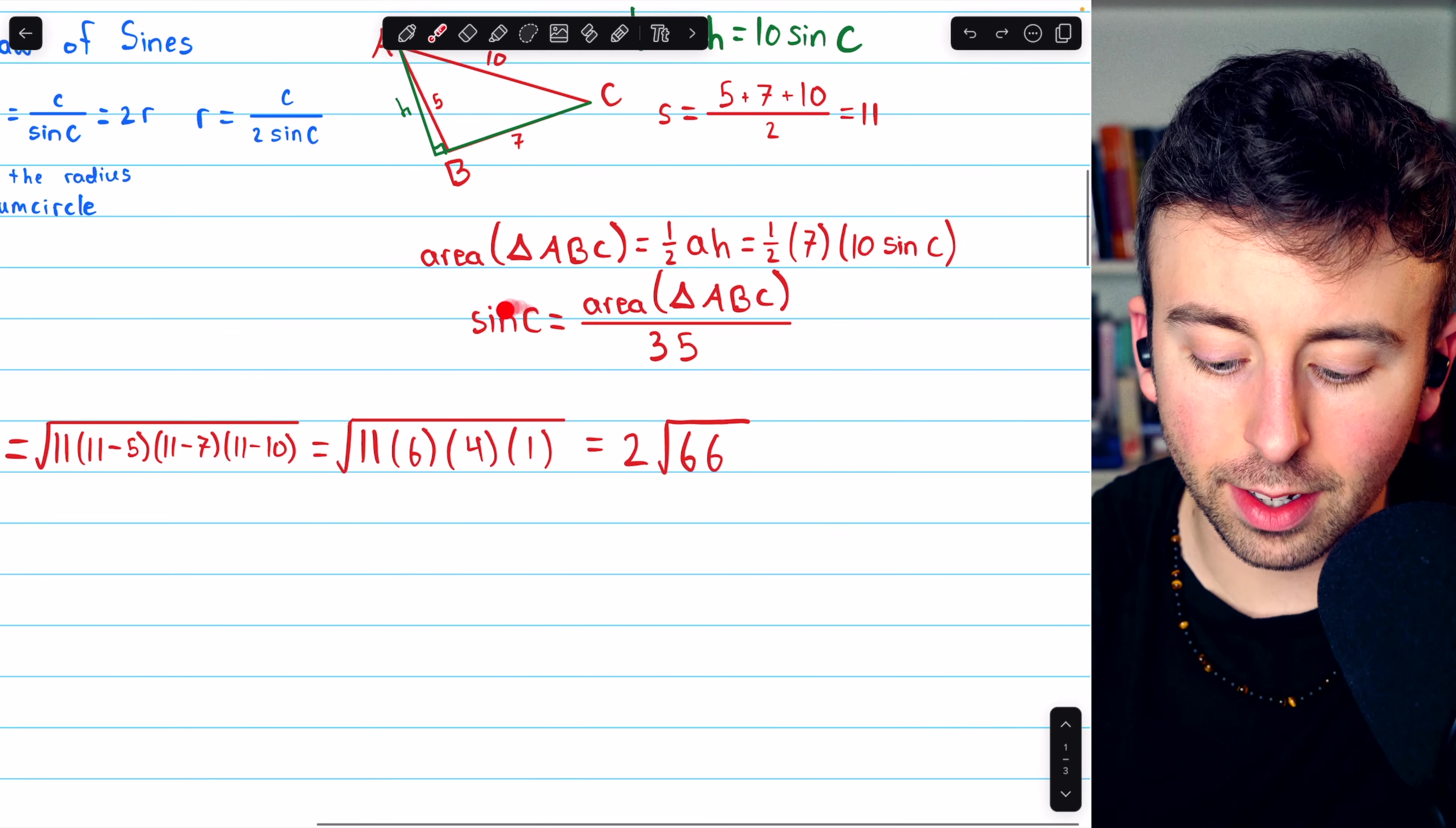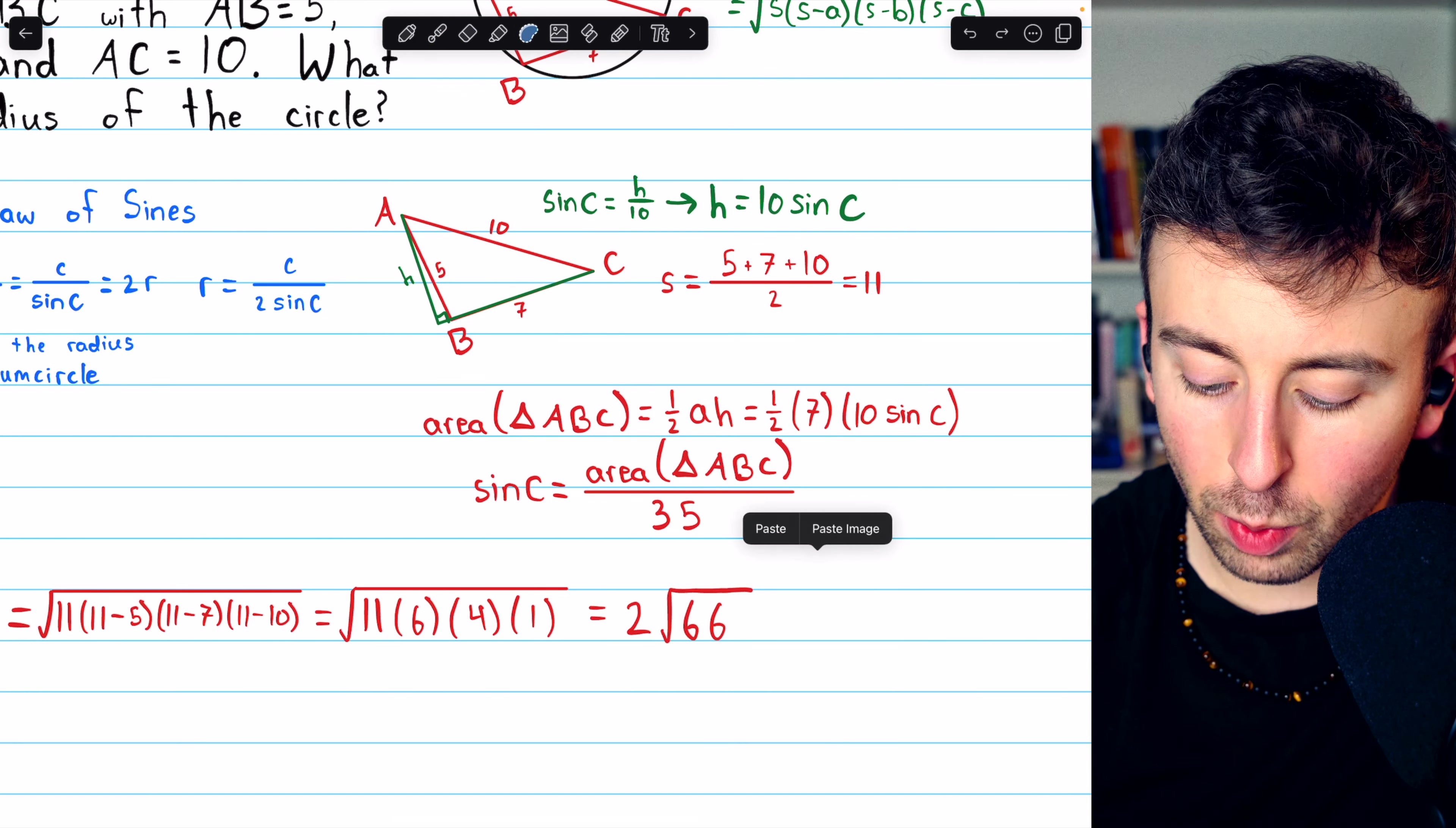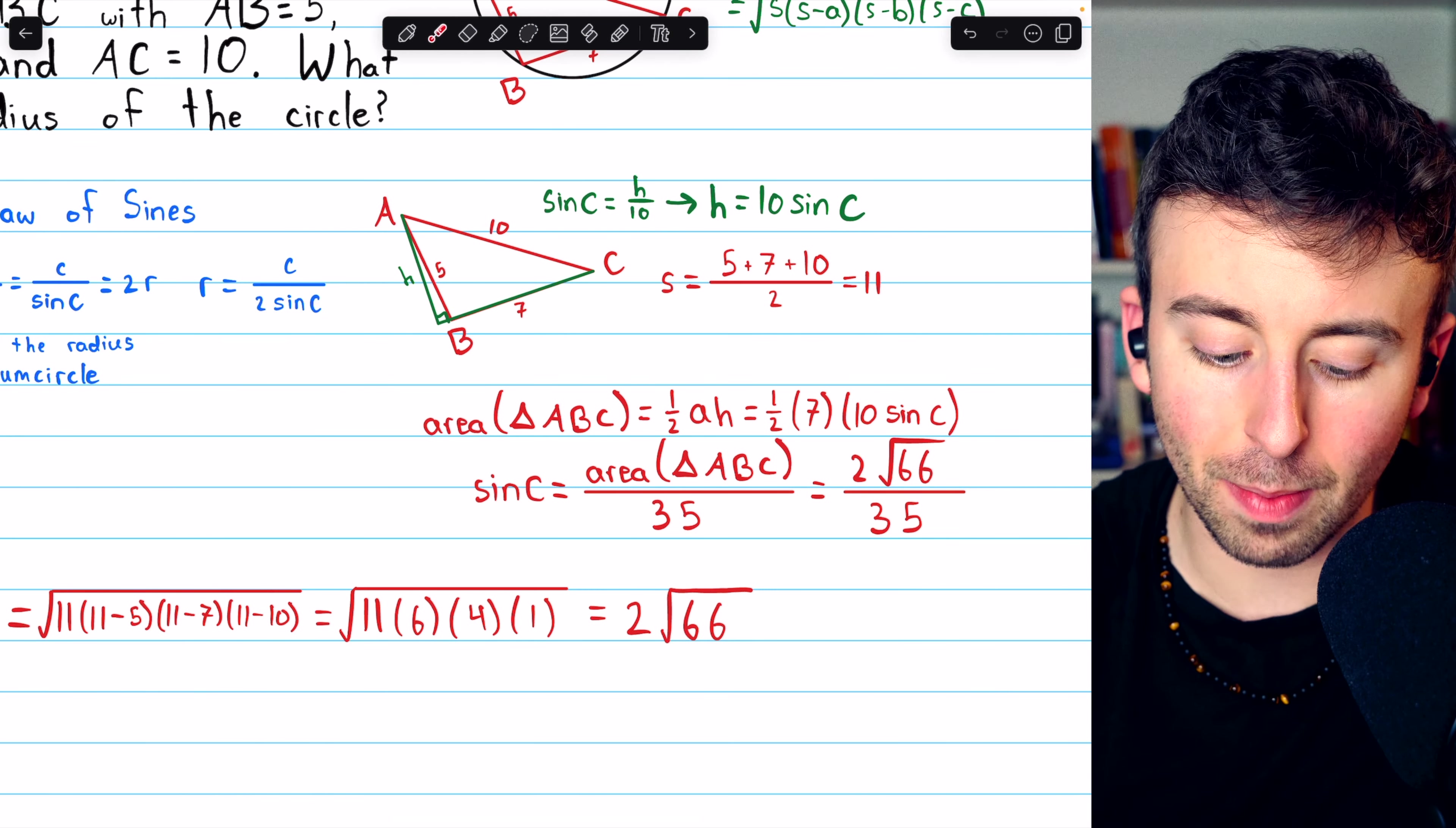With this, we can come back to our sine C equation. Sine C is the area of the triangle divided by 35. But now we know the area of the triangle is 2 root 66. So this is 2 root 66 divided by 35.